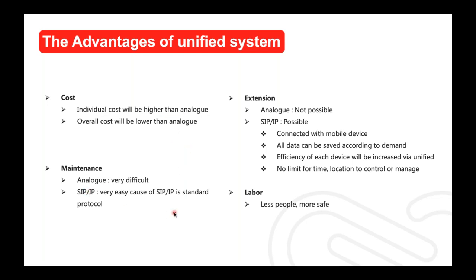Second, maintenance: analog is very difficult because there is no standardized protocol. For example, if you have a video phone over seven years and want to change the receiver unit, you must change the sender unit too — because every manufacturer has their own standard. But SIP IP uses a global standard protocol, so if your phone is out of order, you just exchange or repair that one phone. With analog you must call many different suppliers; with SIP IP you just call one SIP supplier for total service.